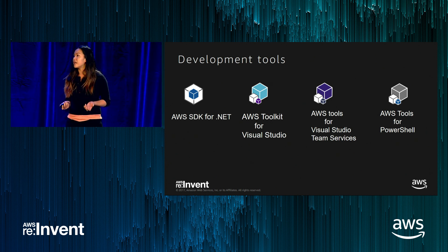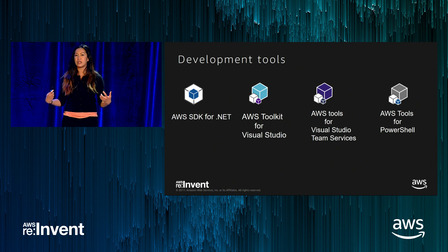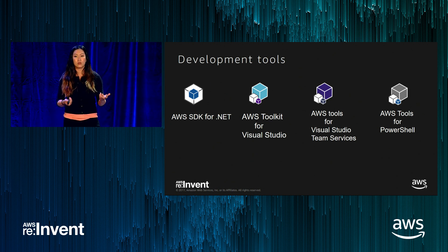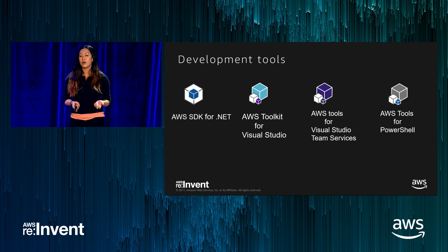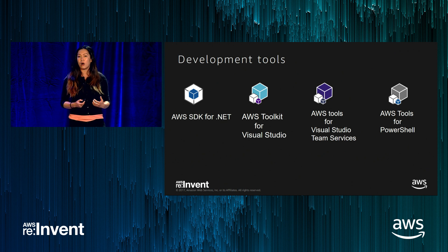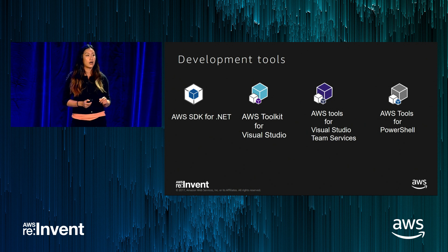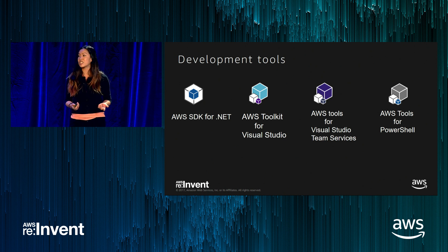Automation is a big thing in creating microservices. We have tools for command line and PowerShell. If you want to know more about developing .NET Core on AWS, there's another session here at re:Invent called Dev 330 — please check that out.